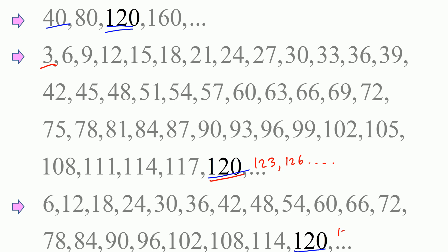We see that 120 is common to multiples of 40, multiples of 3, and multiples of 6. So 120 is our least common multiple between 40, 3, and 6.